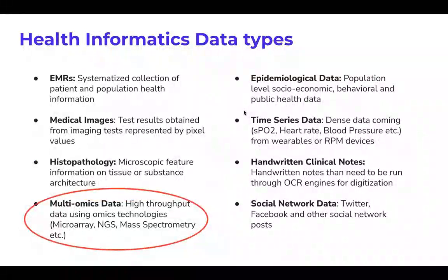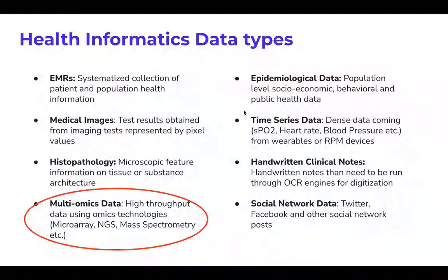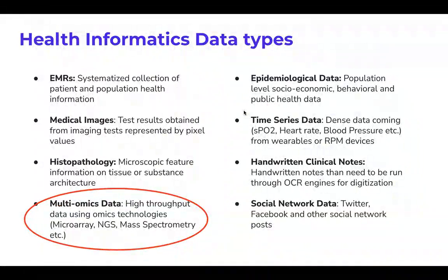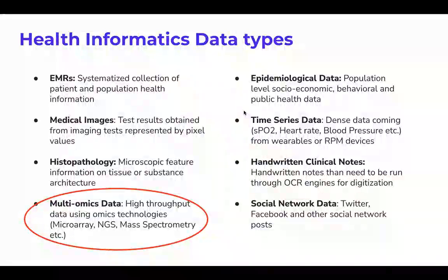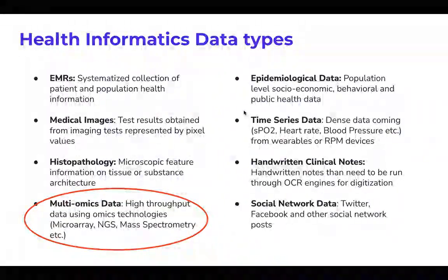For students from the biotech domain, we know multi-omics data. Multi-omics contains genomics, transcriptomics, proteomics, and metabolomics, among other omics types. This high-throughput data from genomics and mass spectrometry is also used for health informatics. Nowadays, people are talking about precision therapy in cancer — you profile the particular tissue, profile the genomic structure, use single-cell transcriptomics to find the main genes perturbed for that patient, and give them a very precise drug as per that gene profile.